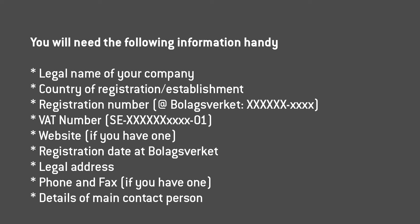Before you start, make sure you have this information to hand — it will make the process quicker and easier. You will need the full legal name of your company and the country of registration. Also, the registration number, which will be the registration number at Bolagsverket, and the VAT number, which is the same as the Bolagsverket number with 'SE' on the front and '01' at the back. You will need to put in your website if you have one, and also the registration date at Bolagsverket. Your legal address will need to be added, phone and also fax — though fax is not necessary if you don't have one. And also, of course, the details of the main contact person.